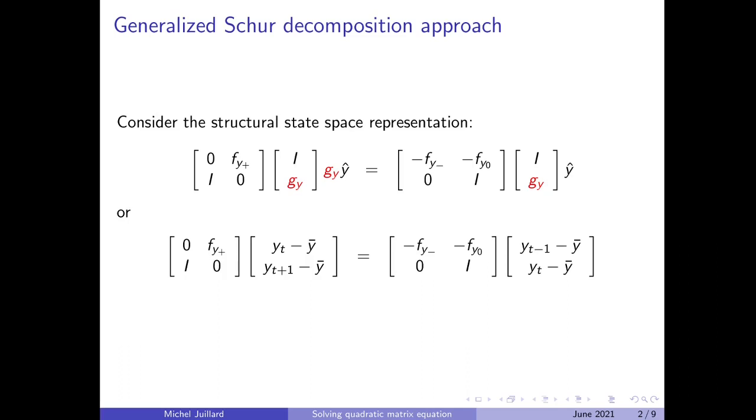To mobilize generalized Schur decomposition, we start by transforming the equation into a structural state-space representation. In the equation, there are three dates for the endogenous variables that matter: we have our variable in t, t-1, and t+1. If we want to write it in state-space representation, what we need to do is stack two dates together. So on the left-hand side we will have yt, yt-1, and on the right-hand side yt-1 and yt. And of course, when there is a steady state difference of zero, we need to remove it.